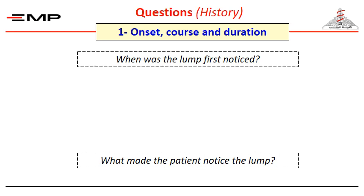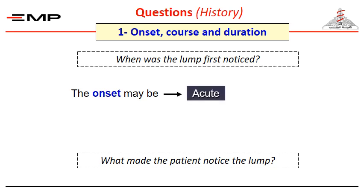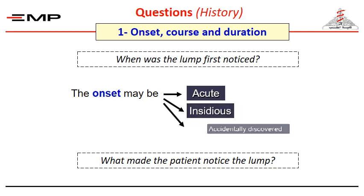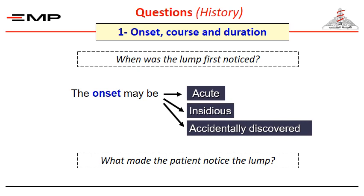You should analyze the complaint, starting by asking about the onset and the cause. The onset can be acute — the patient remembers precisely when it happened — insidious, where the onset is not very precise, or accidentally discovered.